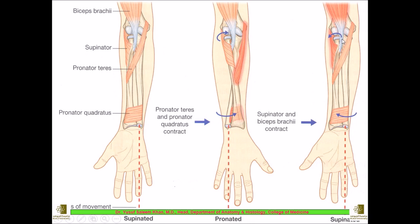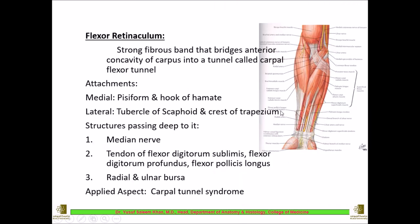Supination is performed by two muscles: the biceps brachii and the supinator, which is in the posterior or extensor compartment of the forearm. We will discuss the supinator when we cover the extensor compartment.